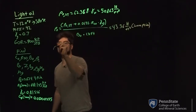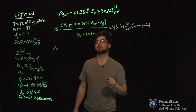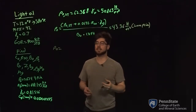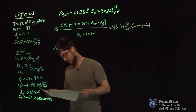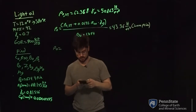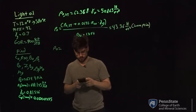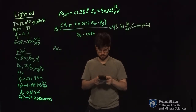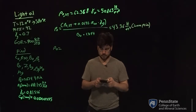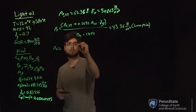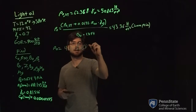Now to do it at bubble point — same equation, the only things changing are the RS value and BO value. The RS value at bubble point is 900, and the BO value at bubble point is 1.44. Doing that calculation, we get a density of 41.114 pounds per cubic foot at bubble point.